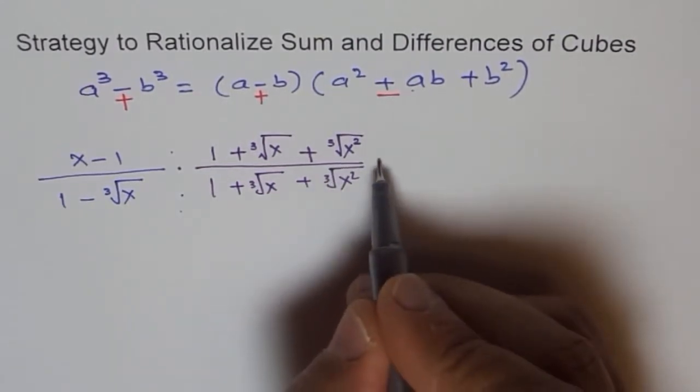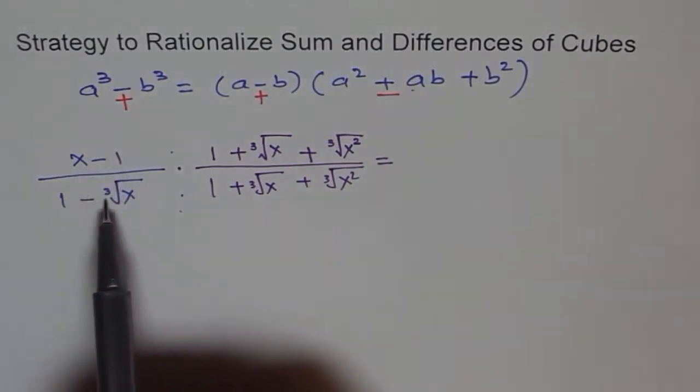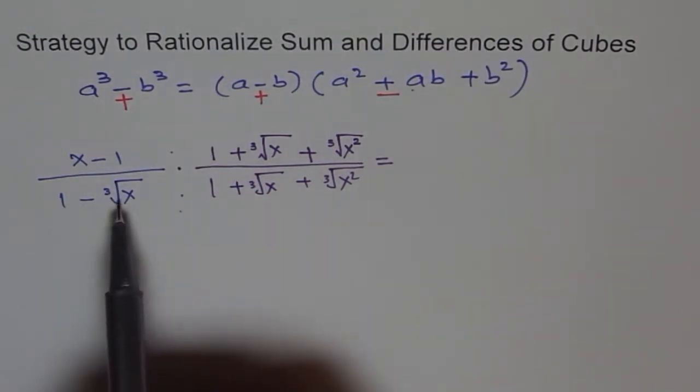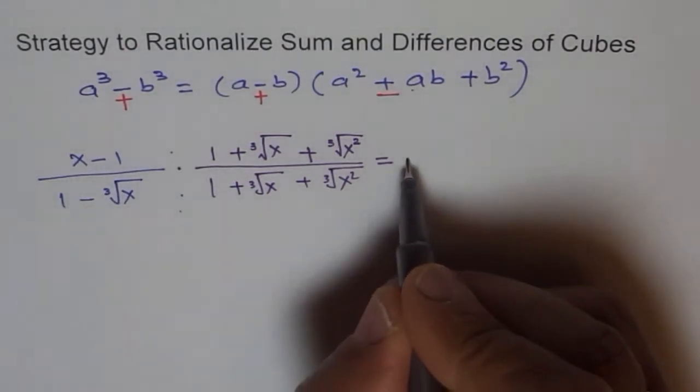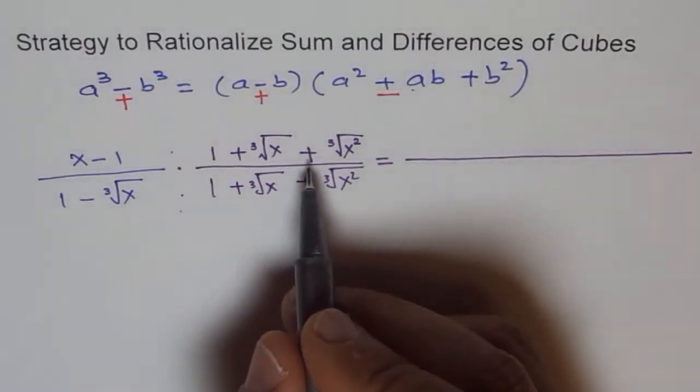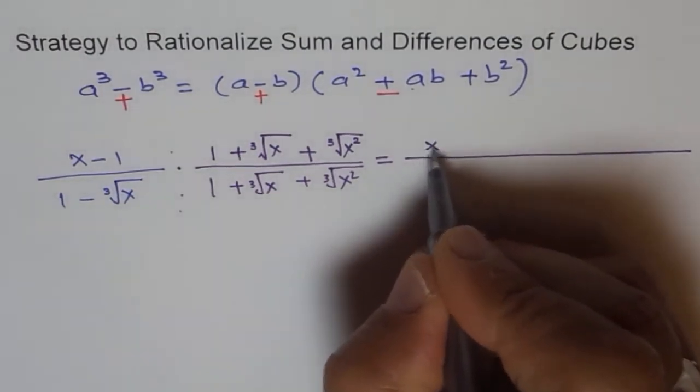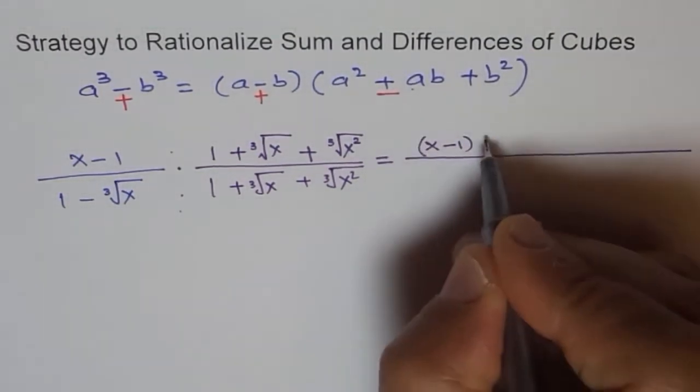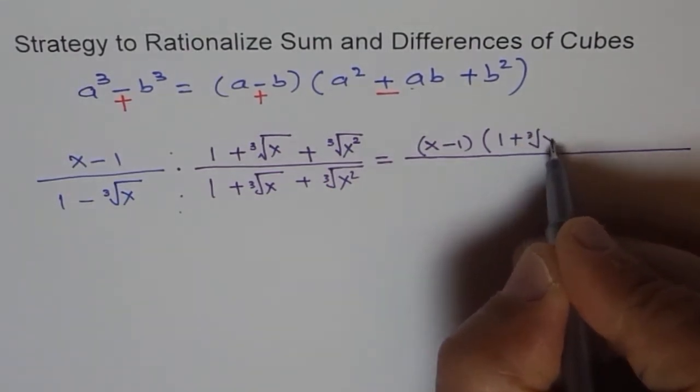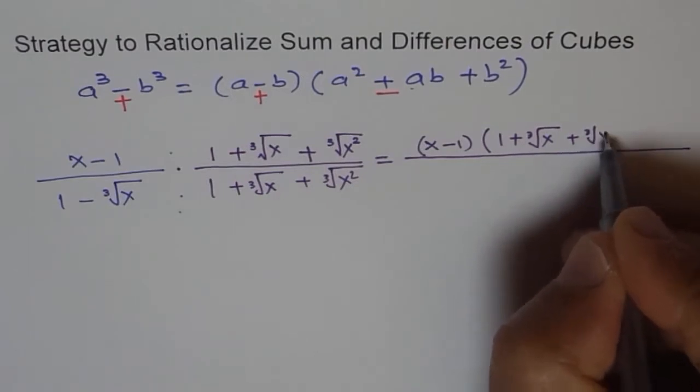Then what do we get? In that case we can expand the denominator and we get a³ - b³ in the denominator. The numerator I am not going to factor. I am just writing it as such. I am writing this as (x - 1)(1 + ∛x + ∛(x²)).